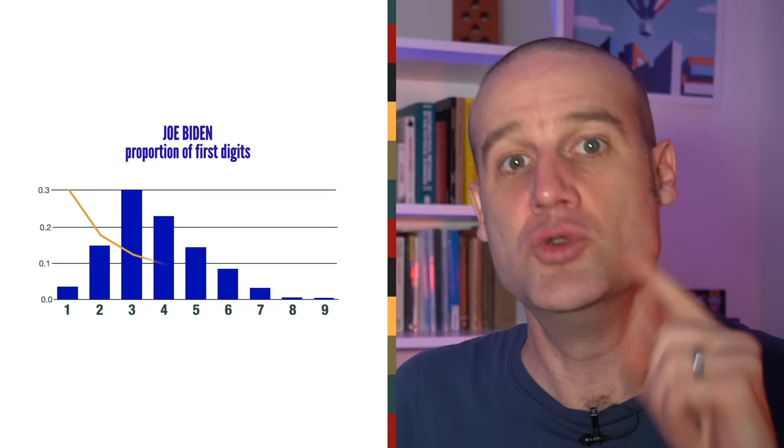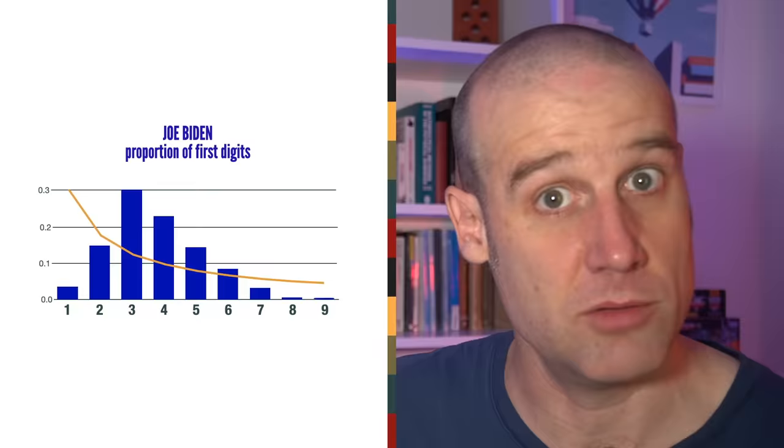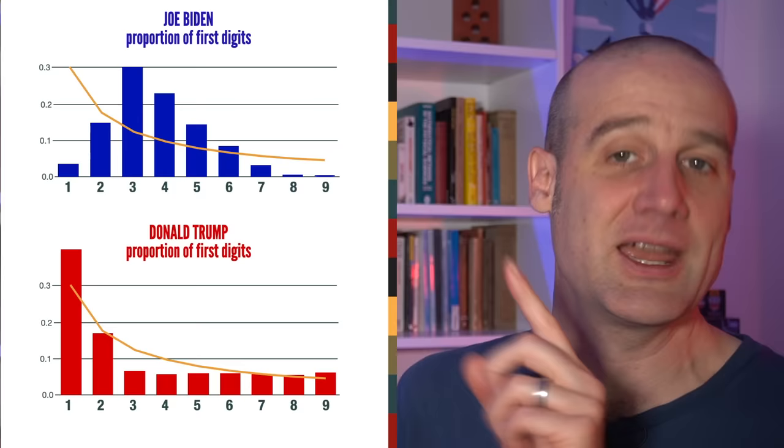Benford's Law is in the yellow, and Biden's totals are the blue bars. There's no match, whereas Trump's data looks like it matches.